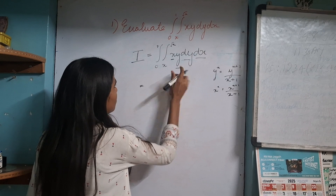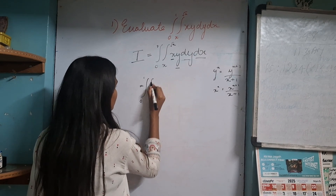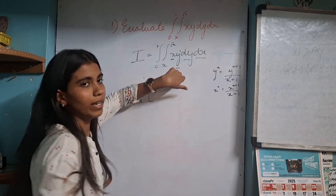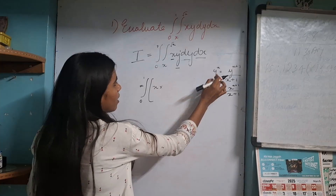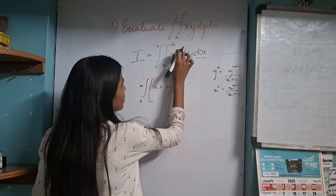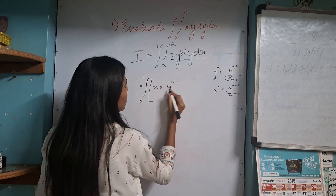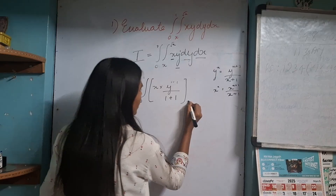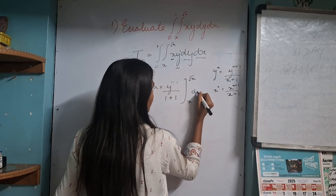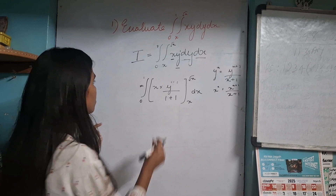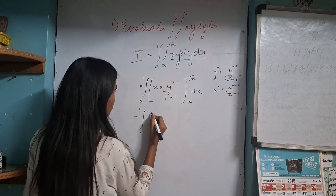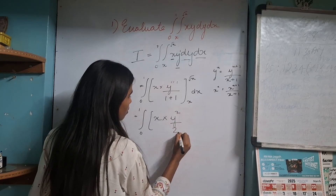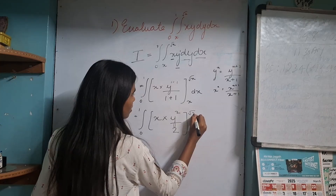Starting with integrating y first. Here y is raised to the power of 1. So when the power is 1, we apply the formula: y power 1, giving us 1 plus 1 divided by 1 plus 1. Your limits are x and root of x, and dx is remaining. We can simplify this to x into y squared divided by 2.